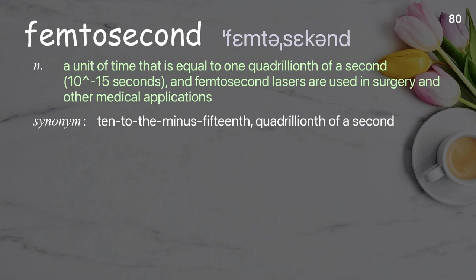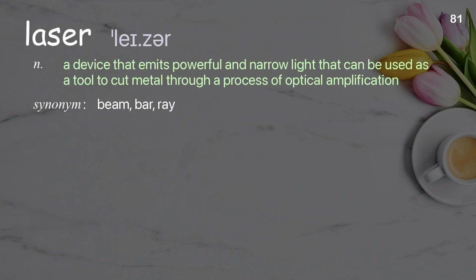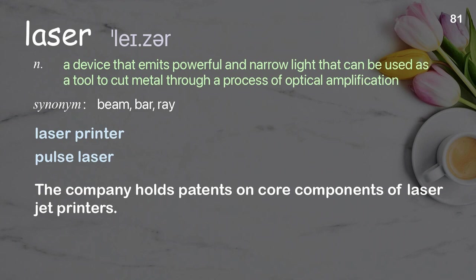Femtosecond: a unit of time that is equal to one quadrillionth of a second (10⁻¹⁵ seconds); femtosecond lasers are used in surgery and other medical applications. Examples: femtosecond timescale, femtosecond technology. Femtosecond lasers are used in various medical procedures including eye surgeries. Laser: a device that emits powerful and narrow light that can be used as a tool to cut metal through a process of optical amplification. Examples: laser printer, pulse laser. The company holds patents on quark components of laser jet printers.